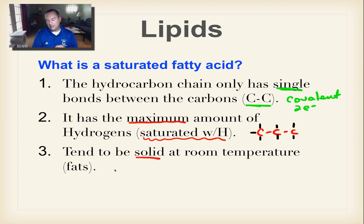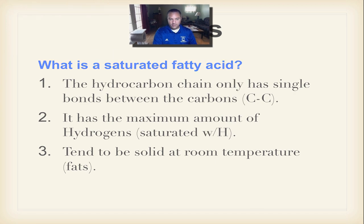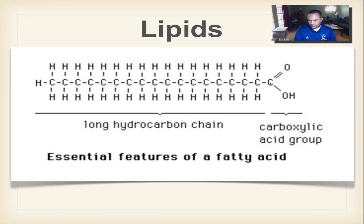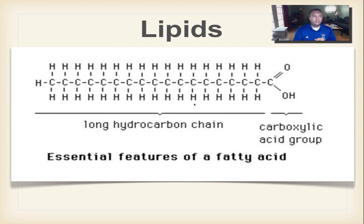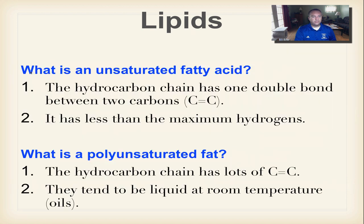Saturated fatty acids tend to be solids at room temperature. Any triglyceride with a lot of saturated fatty acids becomes a fat — like the fat you'd find on a steak or a piece of chicken. Looking at the picture: the carboxyl group is shown, and the long carbon chain has nothing but single bonds, so it is completely covered with hydrogens — not a single hydrogen is missing.